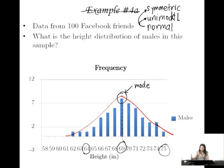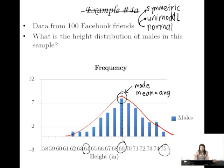In a normal distribution, typically the mode as well as the mean — or average — is going to be the same. To think about the mean in terms of distributions, imagine cutting out this distribution like out of cardboard and then trying to balance it on your finger. Where the distribution would balance, that point is the mean. We'll learn to calculate this later.